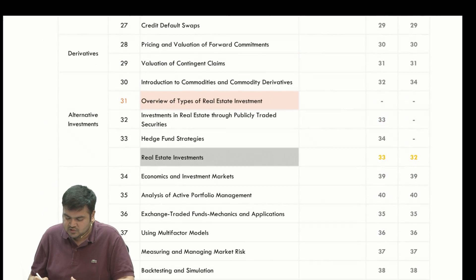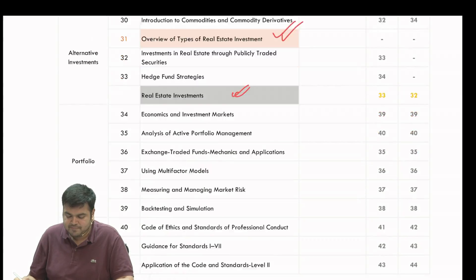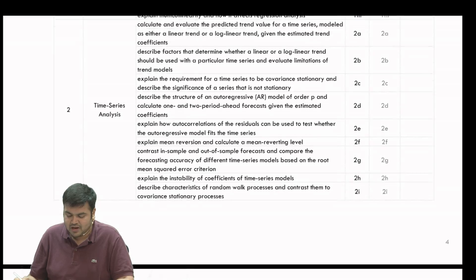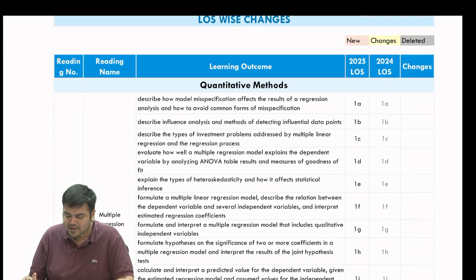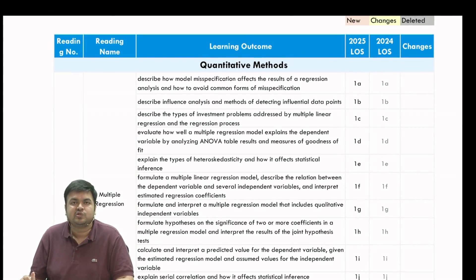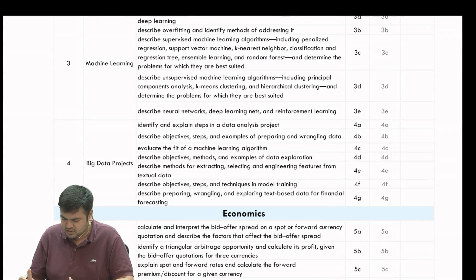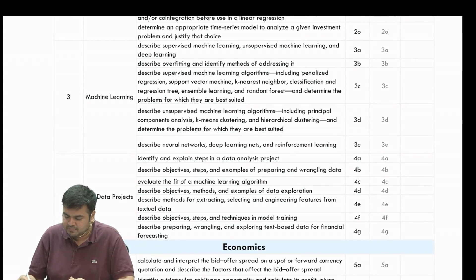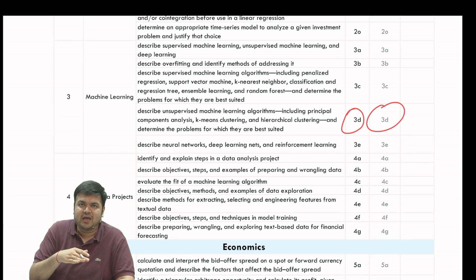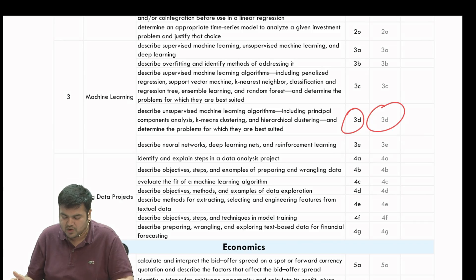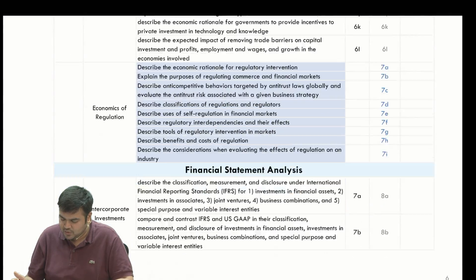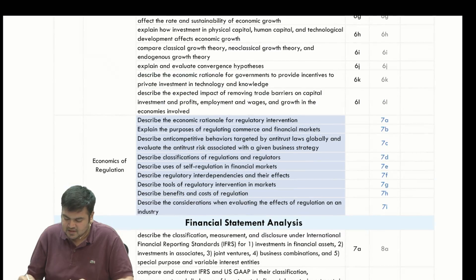This chapter is a replacement — deleting the old one — and real estate financial modeling has been shifted earlier. The same LOS-wise changes are also given, which are almost the same. You can see the mapping here: for example, Chapter 3 LOS D is the same as what it was before. So the LOS-wise mapping is provided.